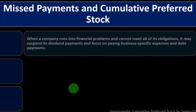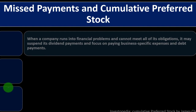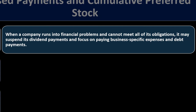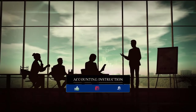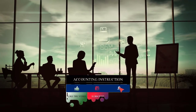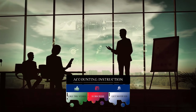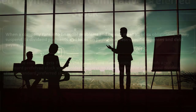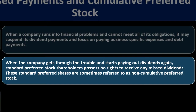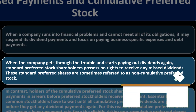When a company runs into financial problems and cannot meet all of its obligations, it may suspend dividend payments and focus on paying business expenses and debt. This is a benefit to the company — they can choose not to pay preferred stock dividends, though it looks bad. They cannot do that as easily with bonds, since not paying bond interest would mean defaulting on the contract. When the company recovers and starts paying dividends again, standard preferred stock shareholders possess no rights to receive any missed dividends — these are sometimes called non-cumulative preferred stock.